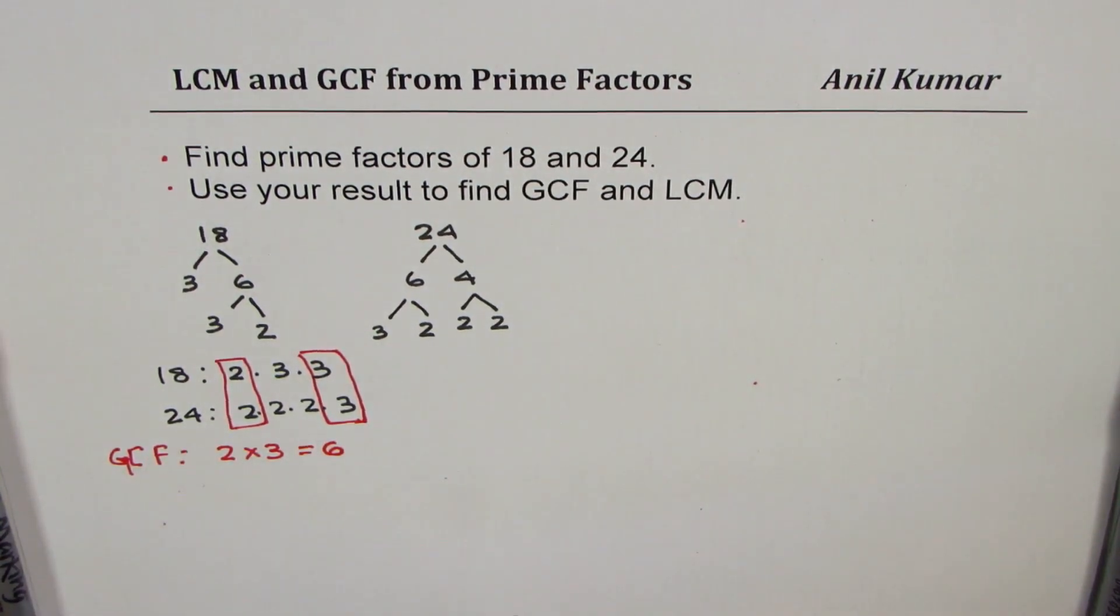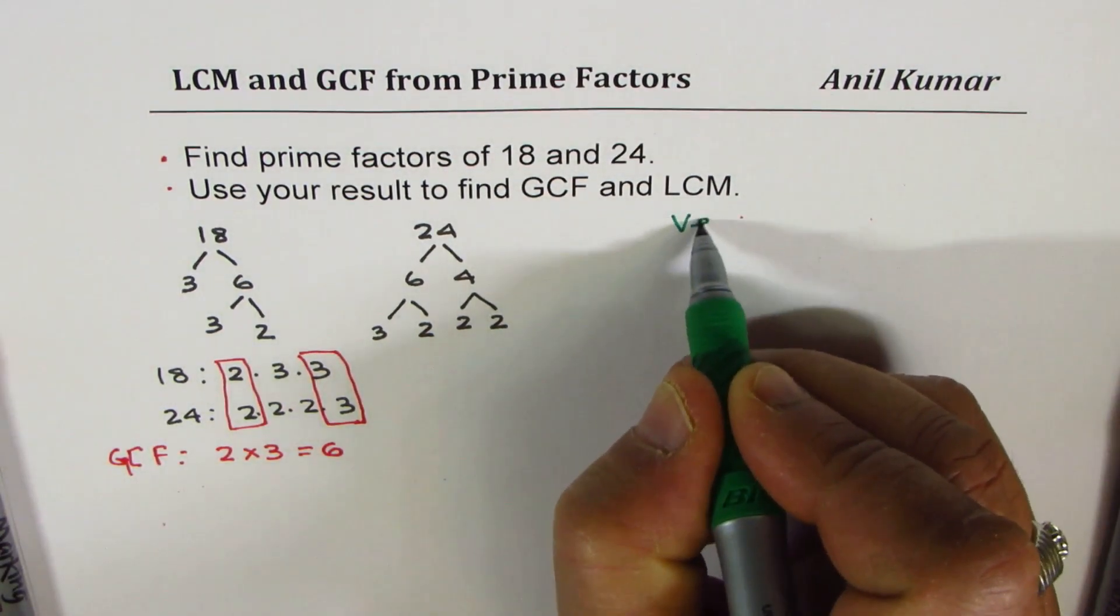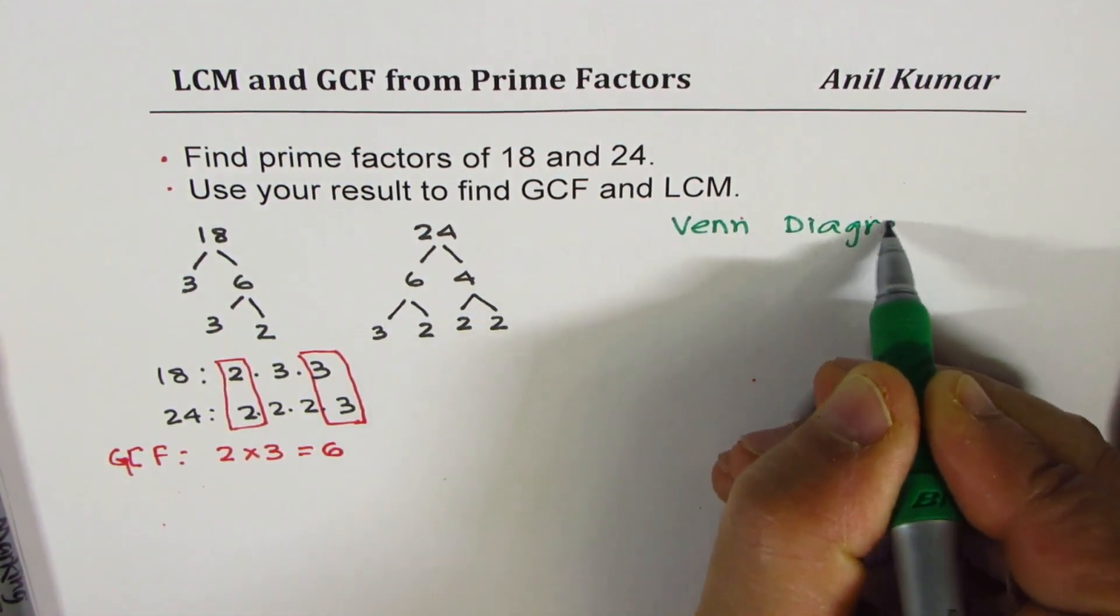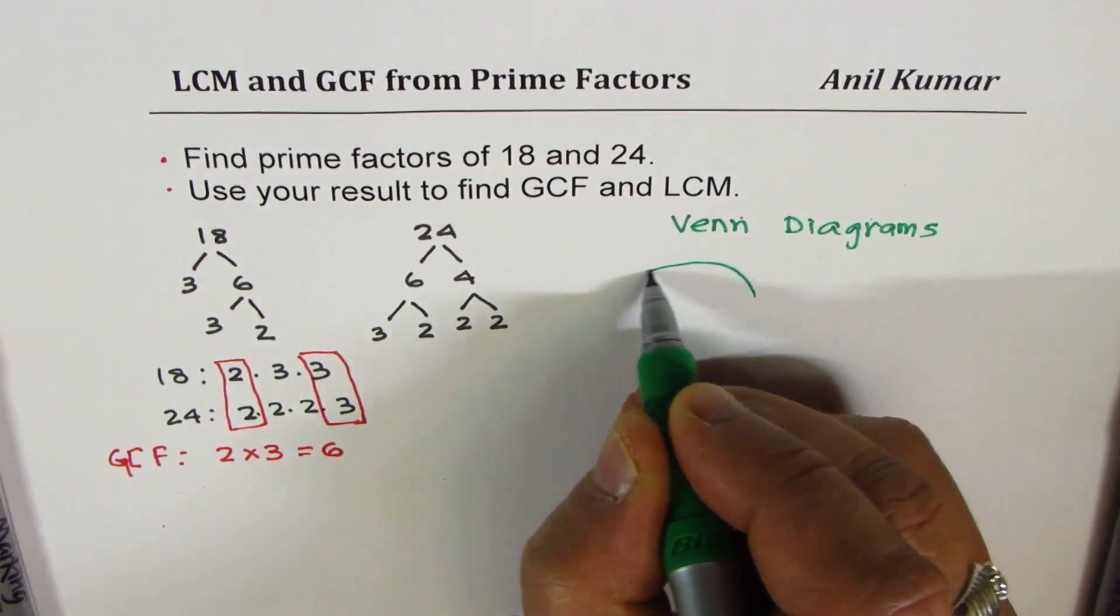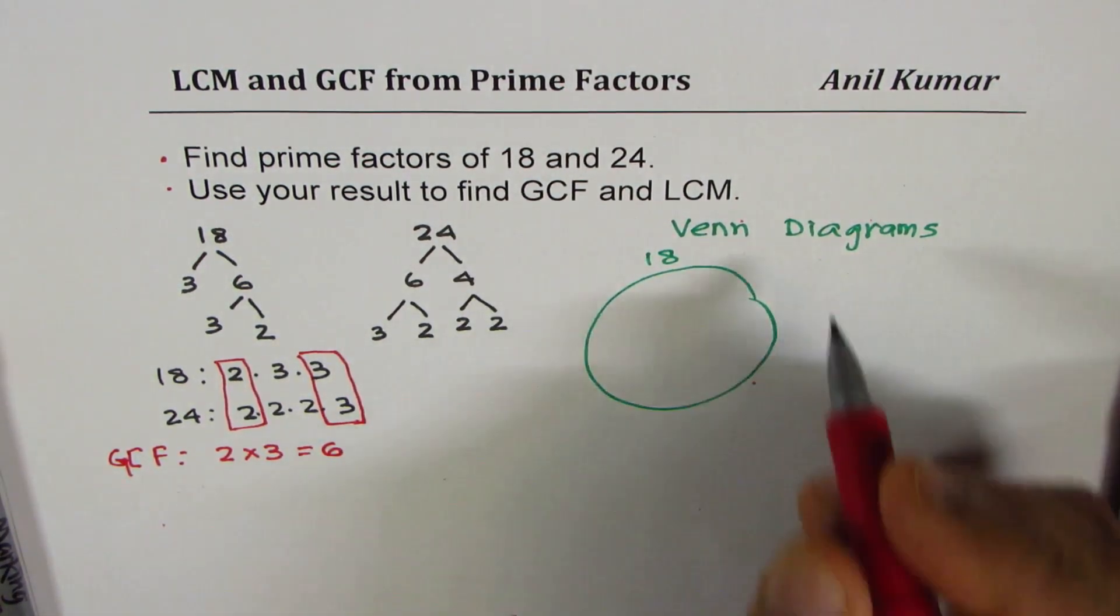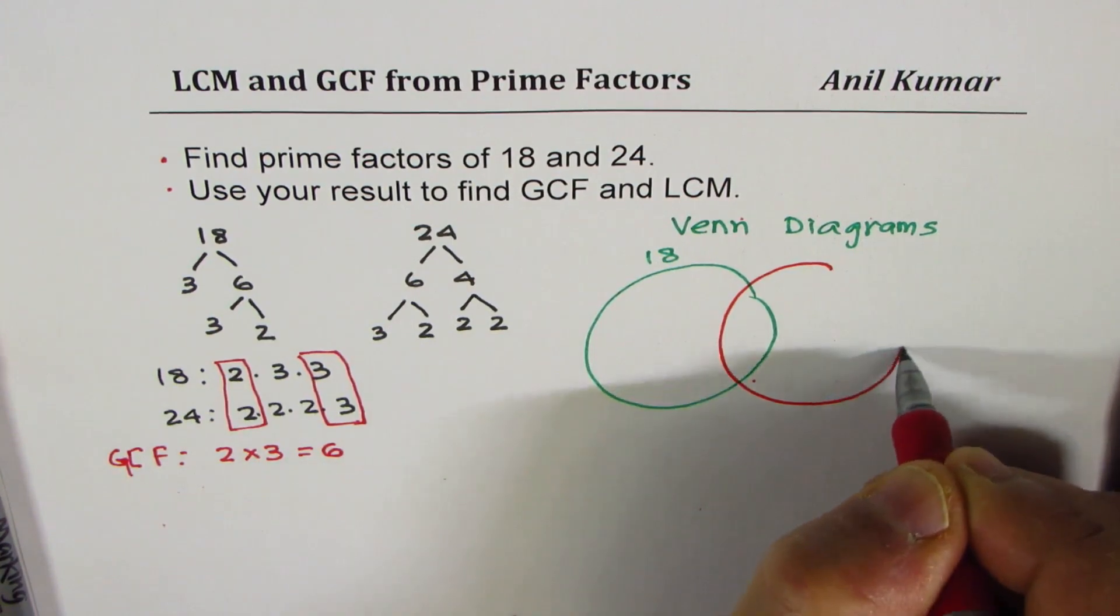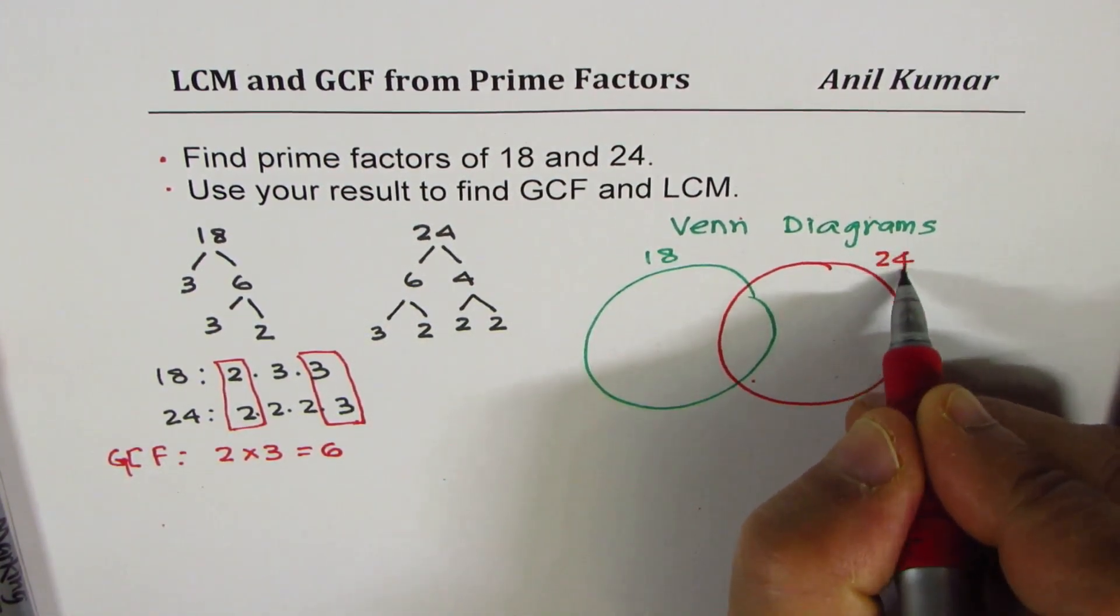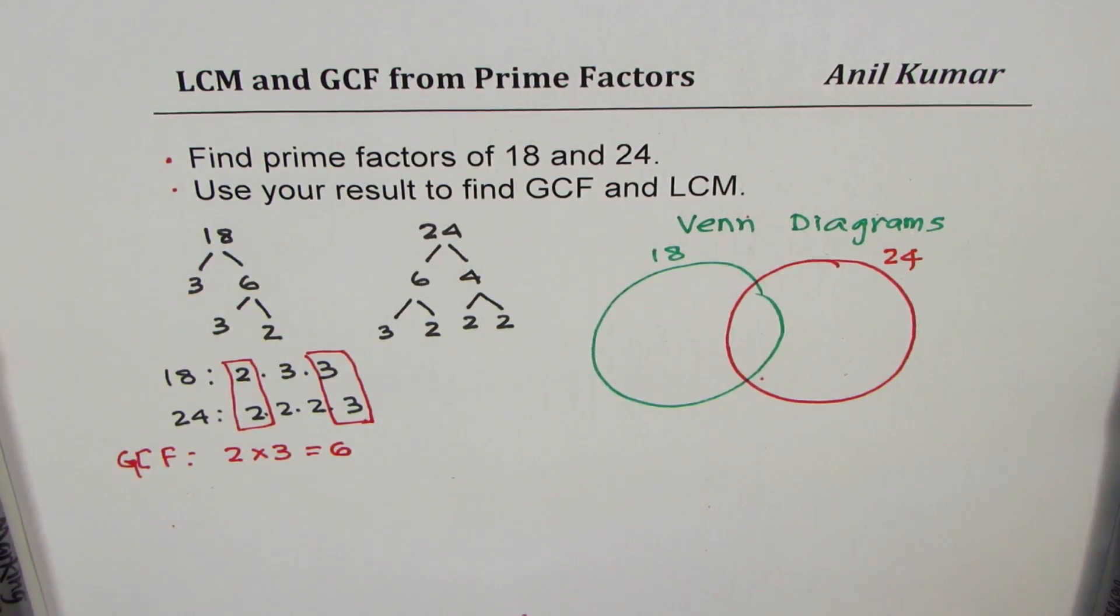That's kind of tricky. What we do here is we take help of Venn diagrams to find LCM. So let me show you how we can find LCM from these prime factors. I hope you remember Venn diagrams. Let's recall. We'll represent these two circles as factors of 18 and 24. So this is the first circle, which will show you factors of 18. The other circle will represent factors of 24, the prime factors.